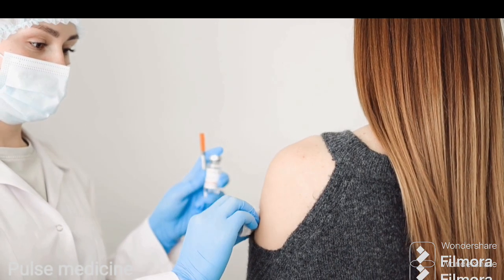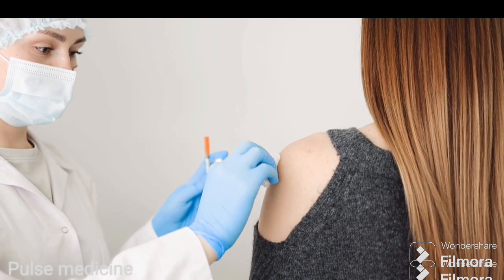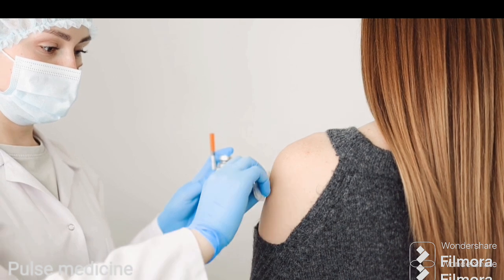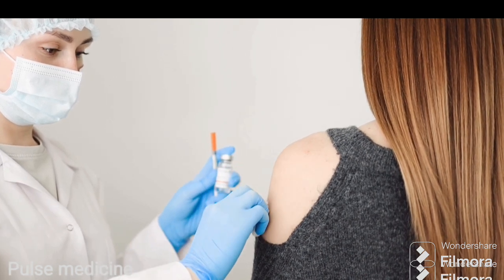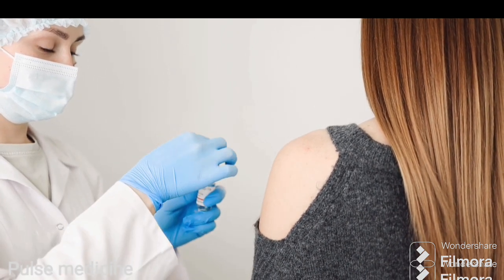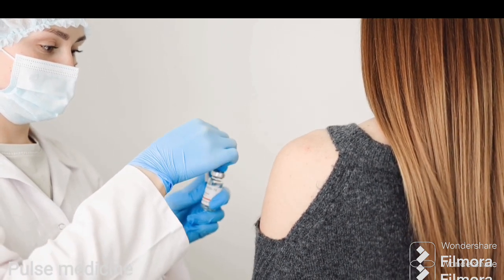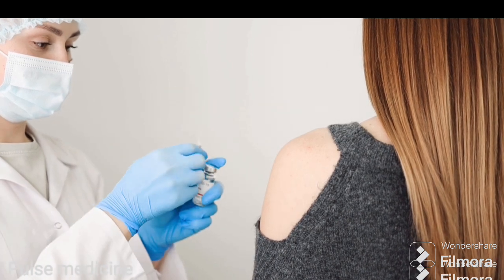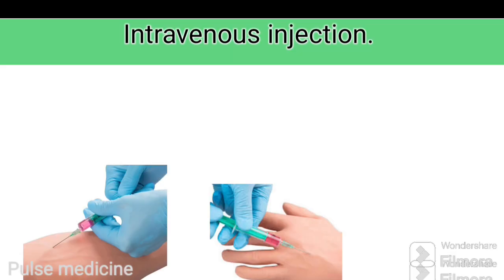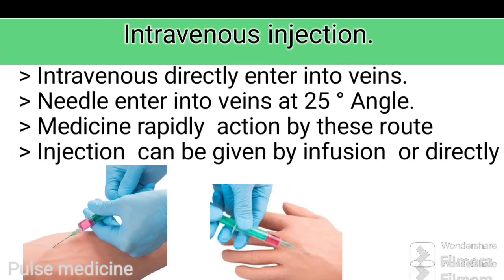We are going to explain each one of them — their uses, injection sites, and angles of injection in a person's body. Starting with intravenous: healthcare professionals use intravenous injection to give medication directly into a vein. The needle enters into a vein at a 25-degree angle, and medicine has rapid action by this route.